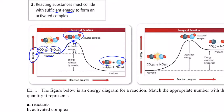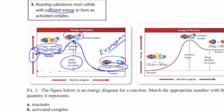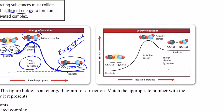Once the activated complex forms, it decomposes and turns into products, and energy is released. The products end up with less energy than the reactants — this is an example of an exothermic reaction. The activation energy process was endothermic, but then energy was released, and so much was released that the products ended up with less energy than the reactants.